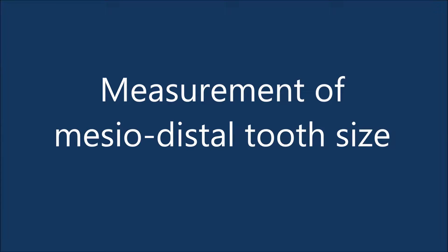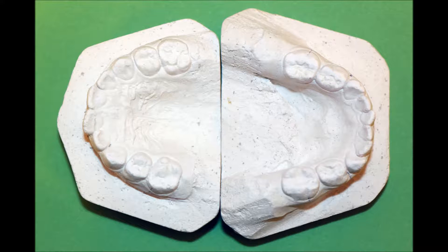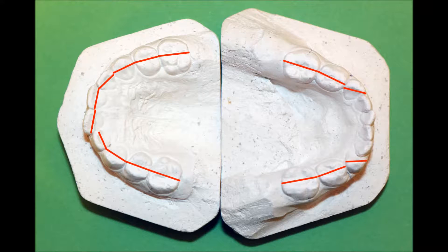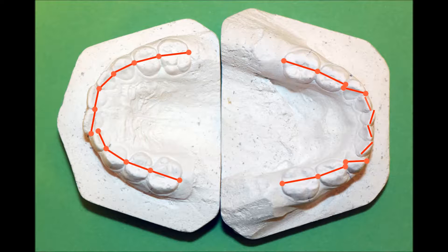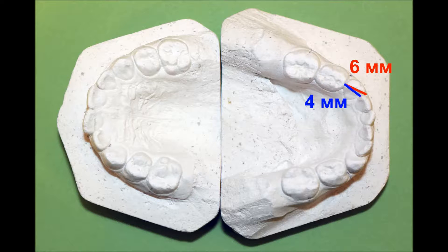Measurement of mesiodistal tooth size. Mesiodistal size of upper and lower primary teeth is measured between the most distant points of the proximal surfaces, lowering sizes along the cutting edge. Space deficit for each tooth is determined by comparison between tooth widths and space available for it in the dental arch. By measuring the width of primary teeth, one can determine individual micro or macrodontia.